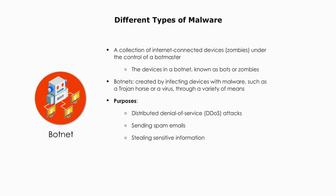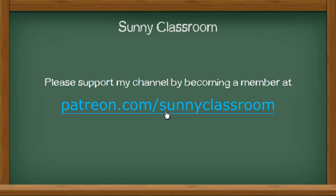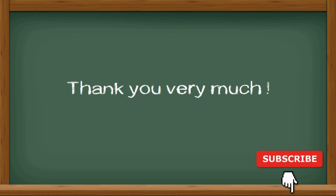Because botnets are made up of many individual devices, they can be very difficult to detect and shut down. To protect against botnets, it's important to use up-to-date security software and keep all software and operating systems patched and updated to prevent vulnerabilities that could be exploited by botnets and other types of malware. Users should also be cautious about opening email attachments or clicking on links from unknown sources. I hope this video is helpful, thank you very much, and see you next time.